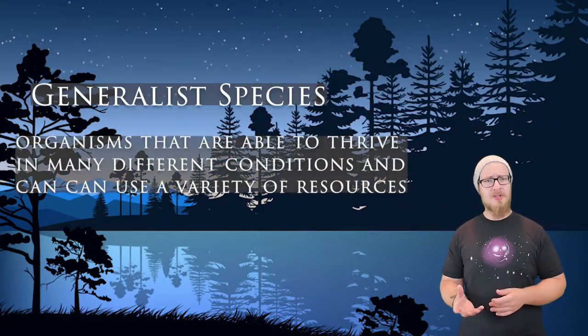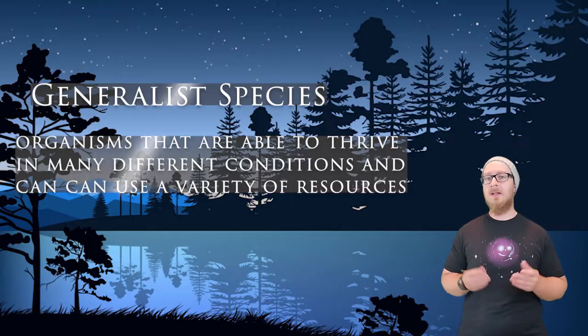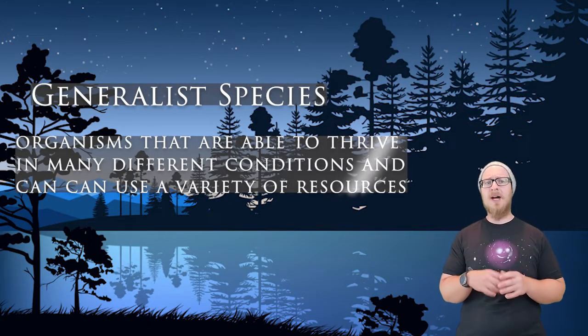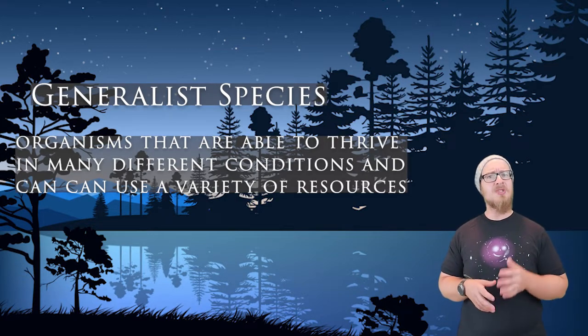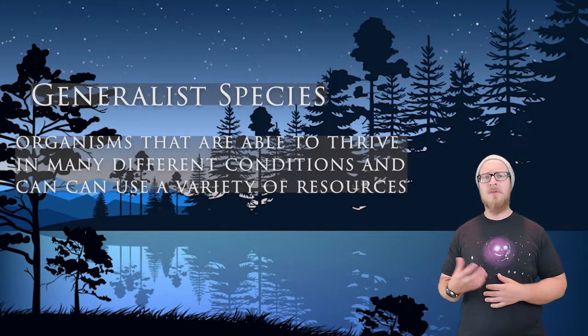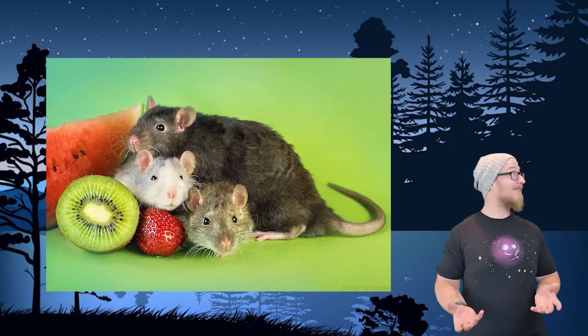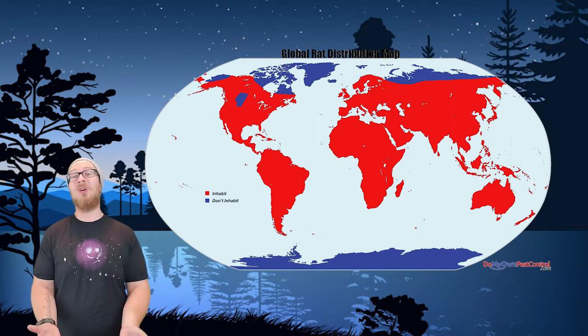A generalist species is a species with a very wide ecological tolerance curve. These are organisms that are able to thrive in a wide variety of environmental conditions and can use a lot of different resources. An example of this is a rat, which can survive pretty much anywhere aside from the polar arctic regions of the planet.